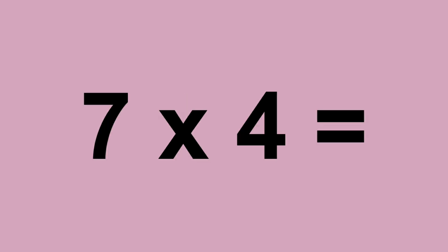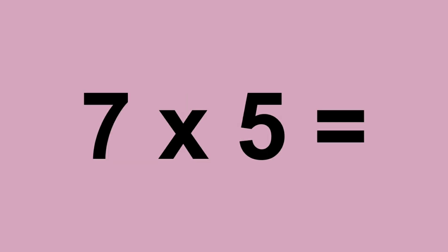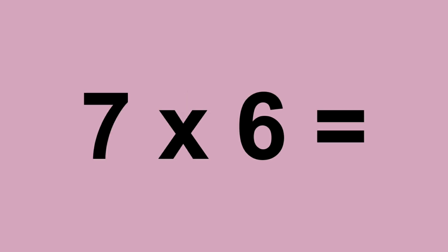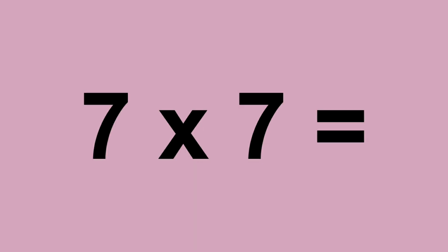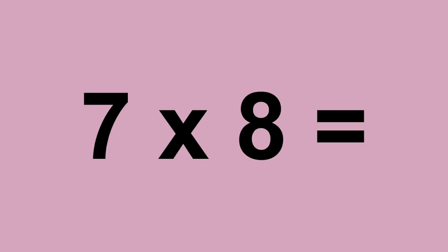Seven times zero equals zero. Seven times one equals seven. Seven times two equals fourteen. Seven times three equals twenty-one. Seven times four equals twenty-eight. Seven times five equals thirty-five. Seven times six equals forty-two. Seven times seven equals forty-nine. Seven times eight equals fifty-six.